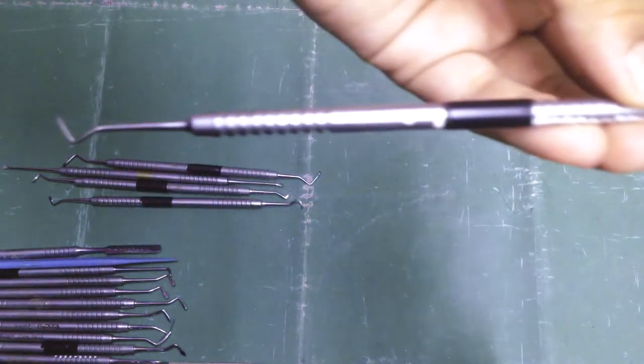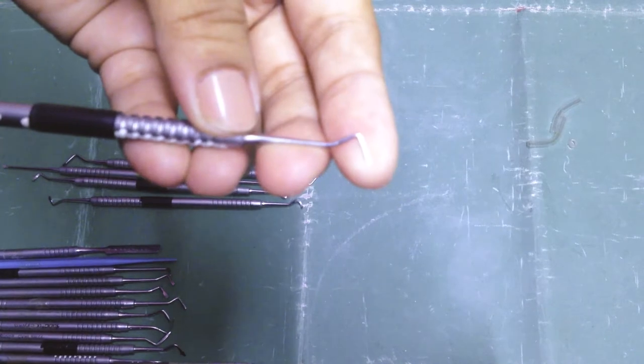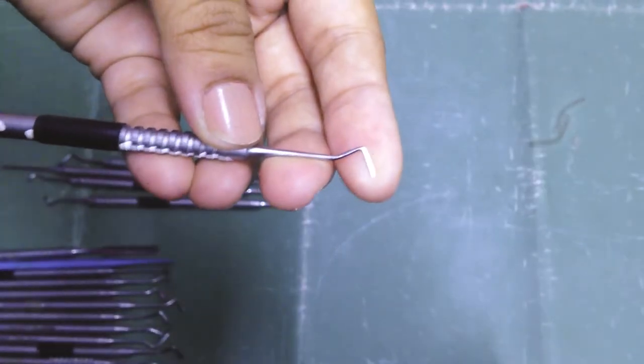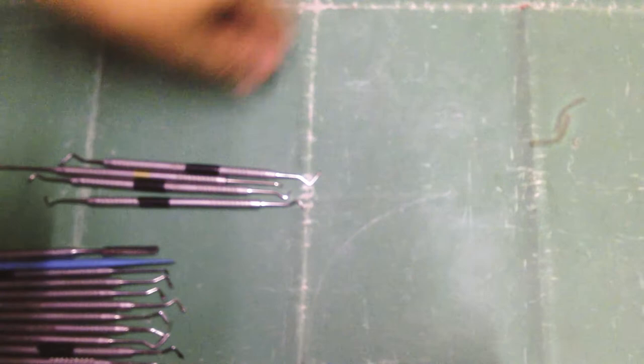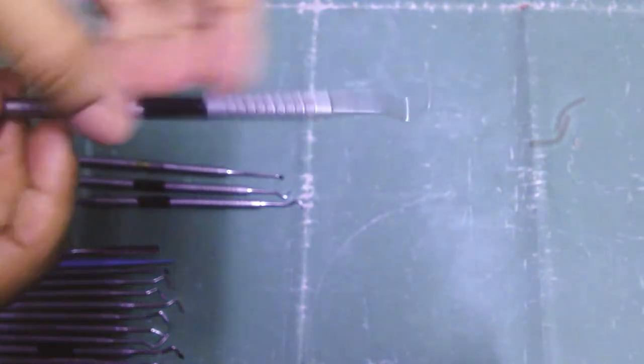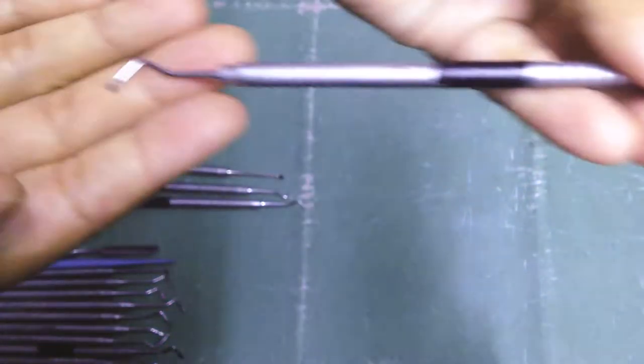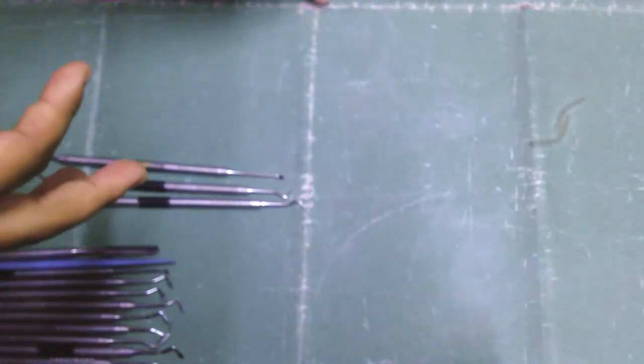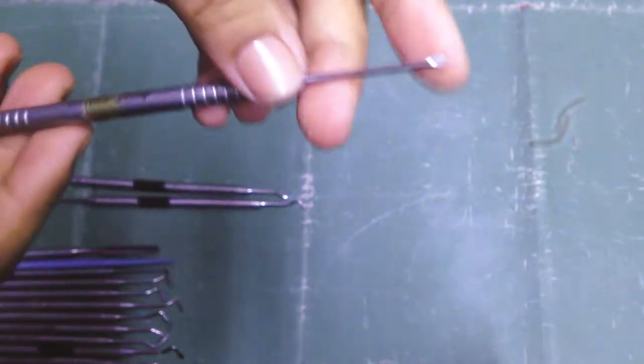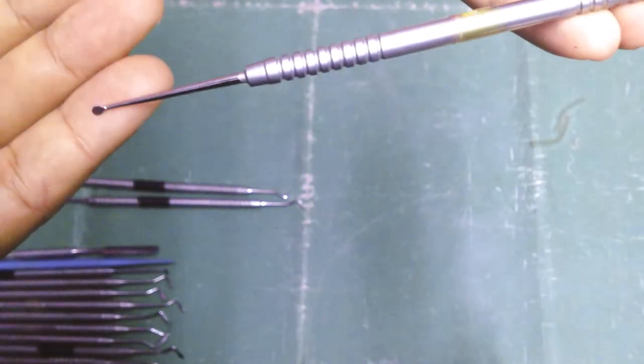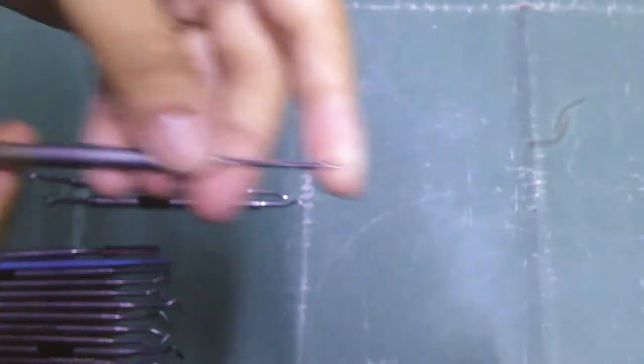As you can see, this is also a double-ended one. Then we have a spoon excavator. Then we have a discoid-cleoid instrument. This is a disc-shaped discoid and claw-shaped cleoid instrument.